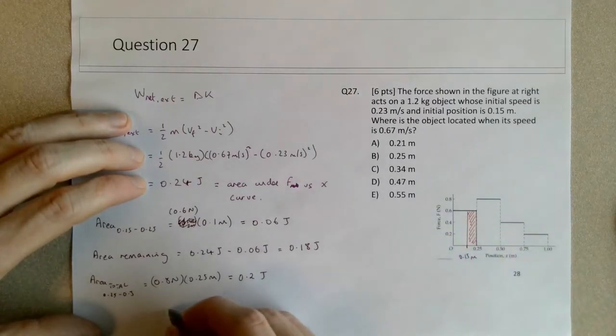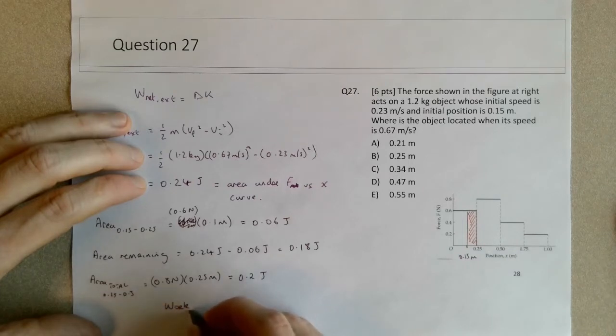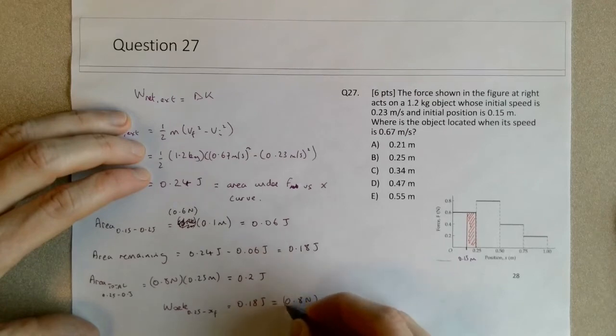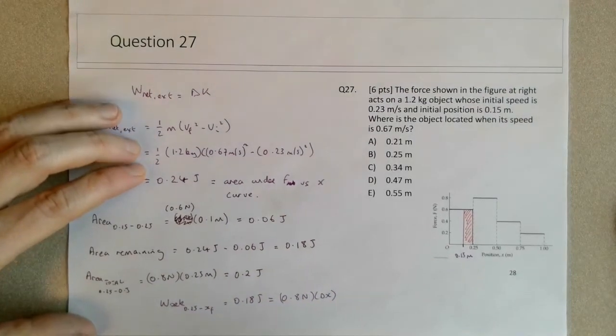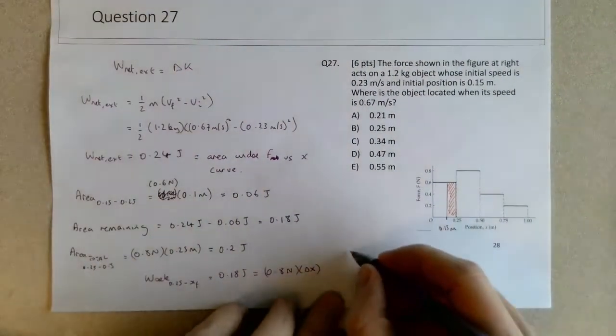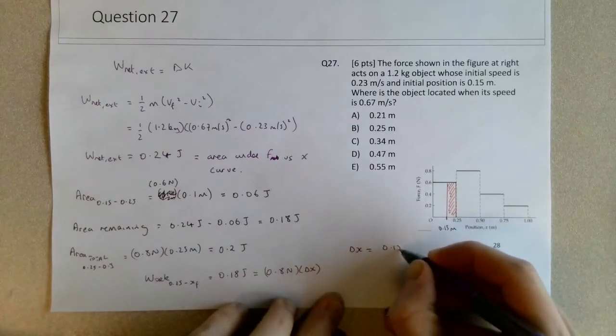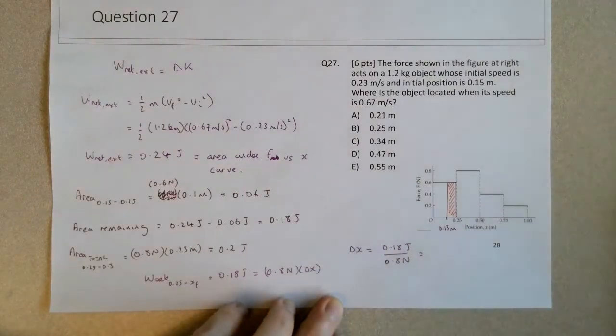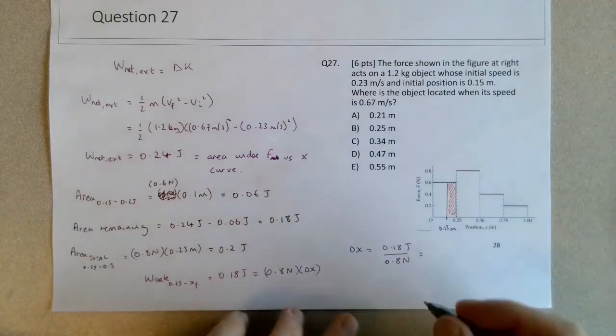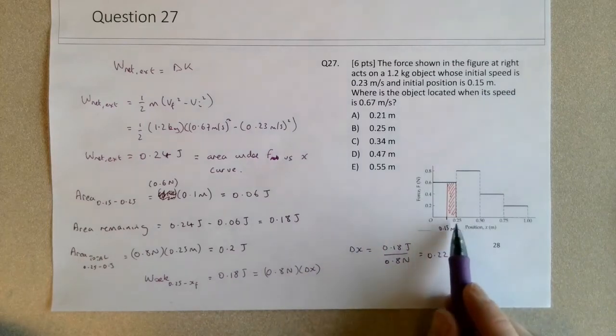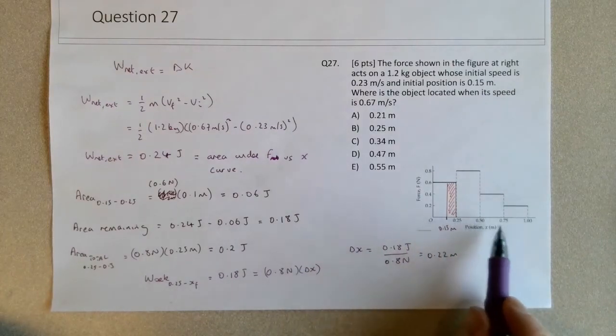The work from 0.25 to its final location xf is 0.18 joules, and that's 0.8 newtons times some delta x. So delta x equals 0.18 joules divided by 0.8 newtons, which gives us 0.225 meters. That's how far it moves, but this is only delta x, where the initial position is 0.25 meters.